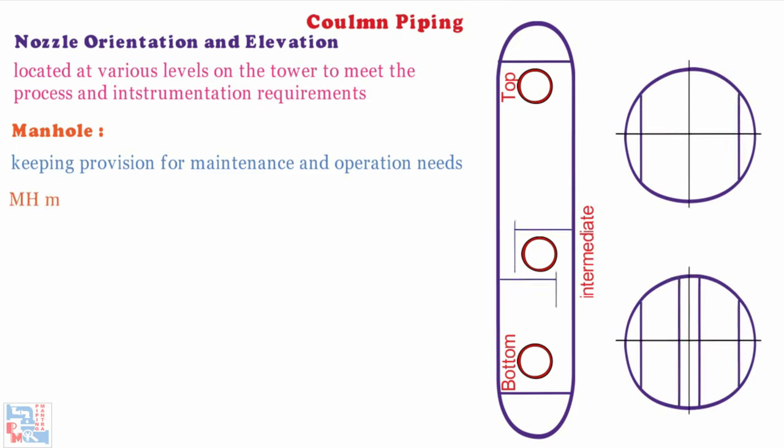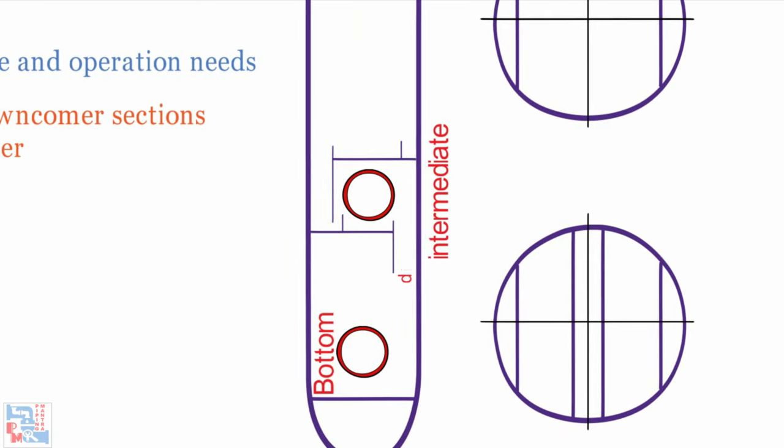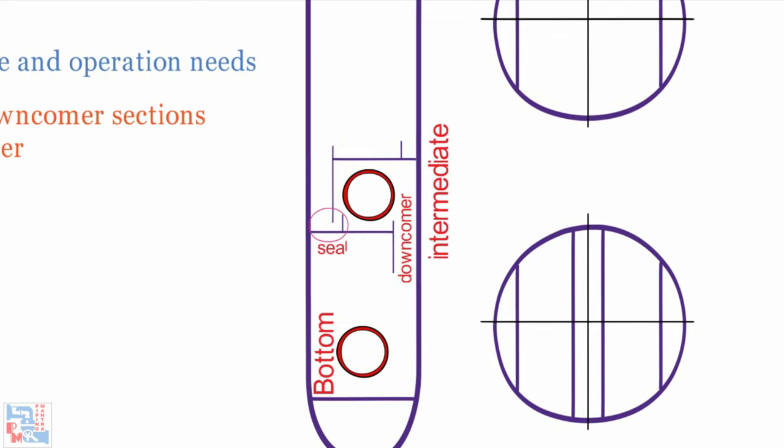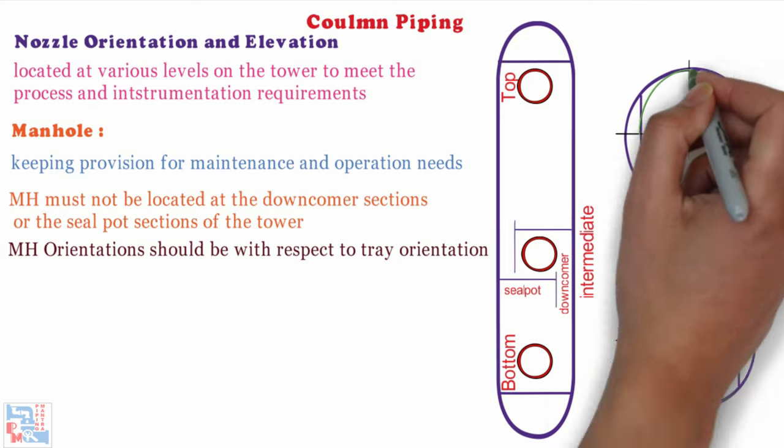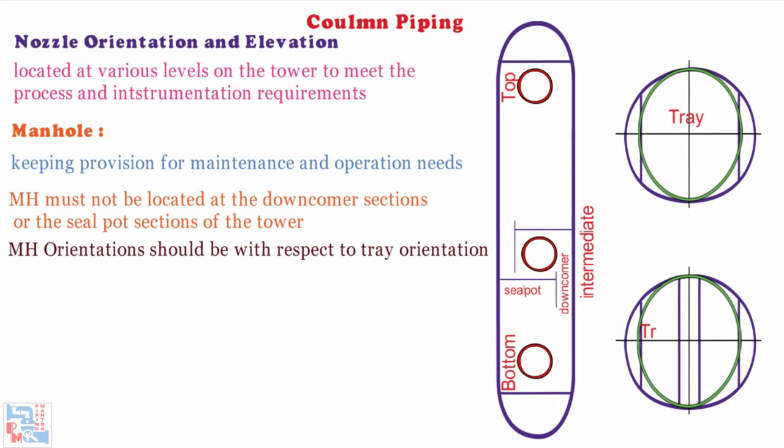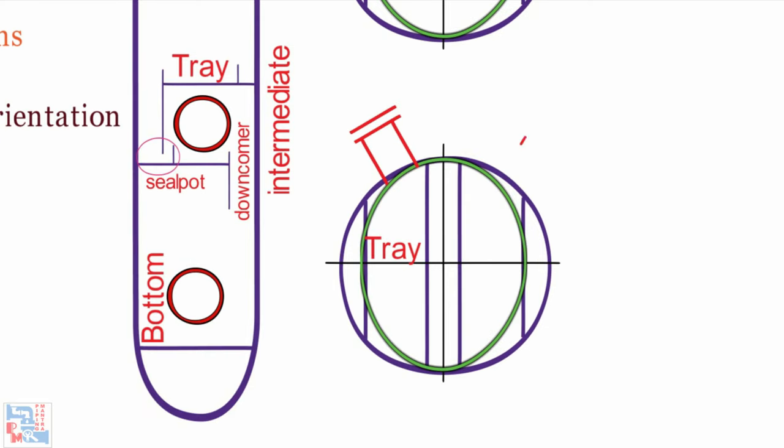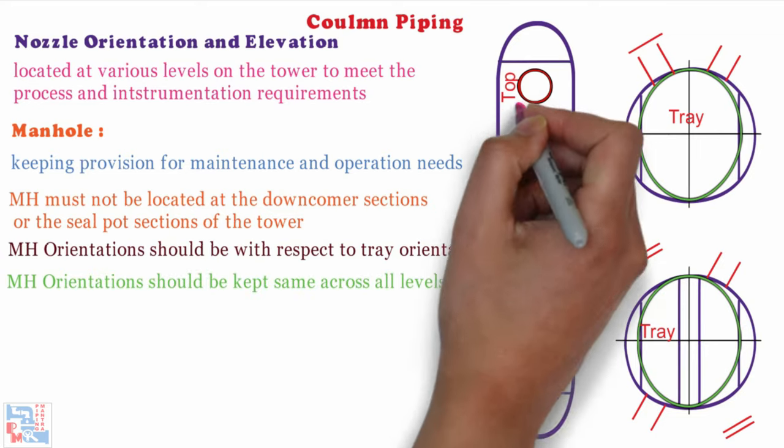These access nozzles must not be located at the downcomer section of the tower or the seal pot sections of the tower. Orientations of manholes should be with respect to tray orientation. Orientation of manholes if possible should be kept same across all levels.